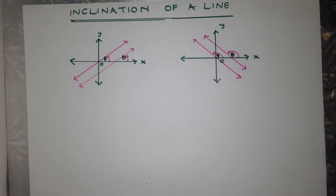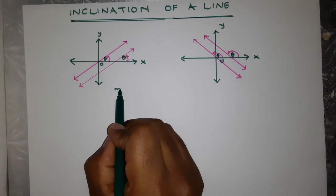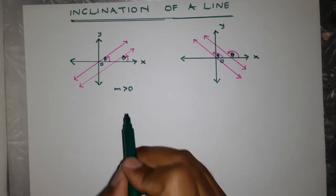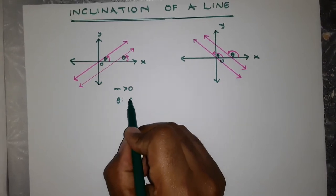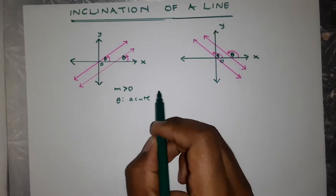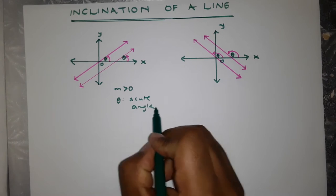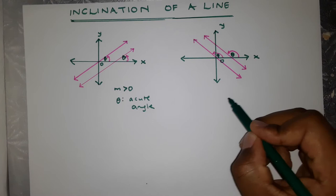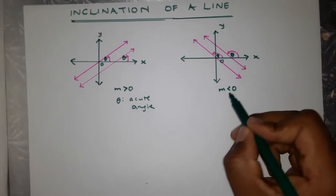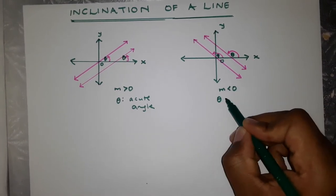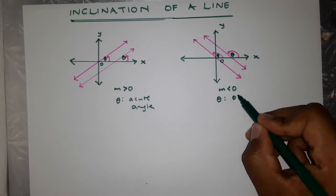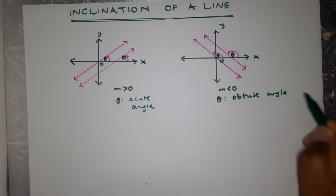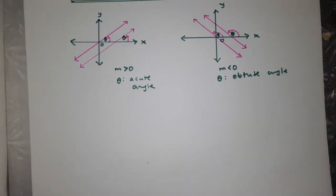I would like to mention that when your gradient is positive — just like these lines — your theta will be an acute angle. And when your gradient is negative, if you've got a negative gradient, then your theta will be an obtuse angle. We're going to see how we get that.